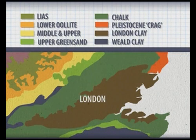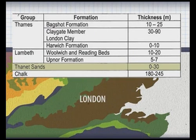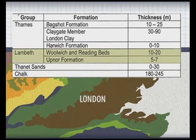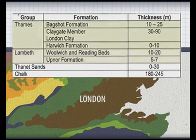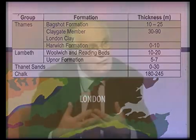Overlying the chalk, we have the Thanet sands, shown here. And then over them we have the Lambeth group, which we were talking about and which is very difficult to tunnel. And they emerge here. Then above them we have the London Clay, which is over most of north London and near the surface. Overlying the London Clay, you often get gravel, which has been deposited by the River Thames at various stages, and you also get alluvium, which is a mixture usually of silts and often quite soft clays, recently deposited.